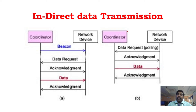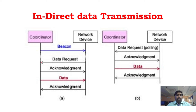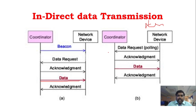In indirect transmission beacon mode, the coordinator sends the beacon signal, all devices synchronize, then the particular device sends a data request, the coordinator sends data, and an acknowledgement is returned. In non-beacon mode indirect transmission, the device first sends a data request, receives an acknowledgement, then the coordinator sends the data, and a final acknowledgement is sent.